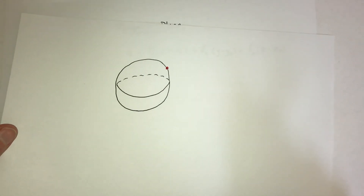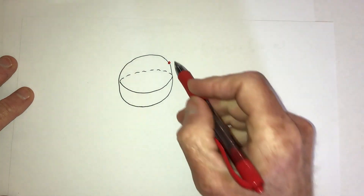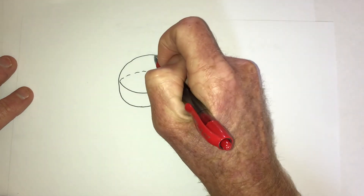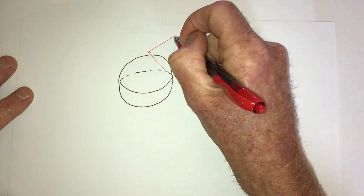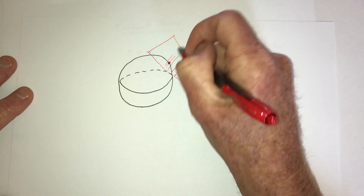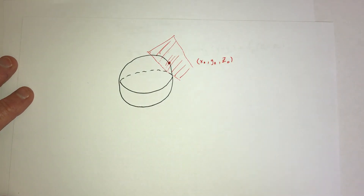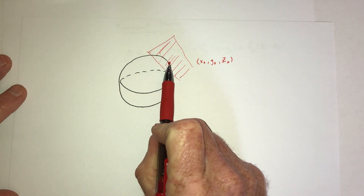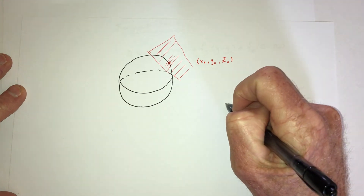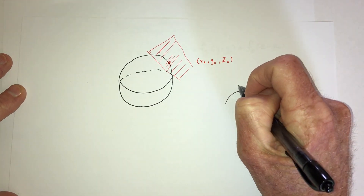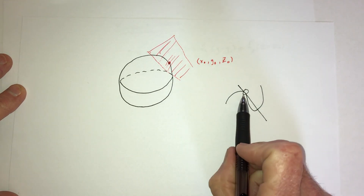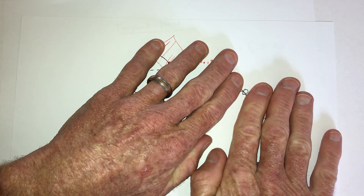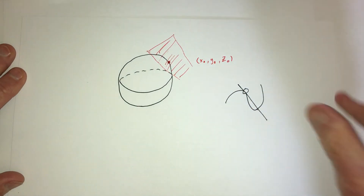A tangent plane is like if you have a sphere and you're given a point (x₀, y₀, z₀), then take a plane like a piece of paper that's just touching at that one point. If you zoom in really close, the tangent plane and the function itself are very close to each other.